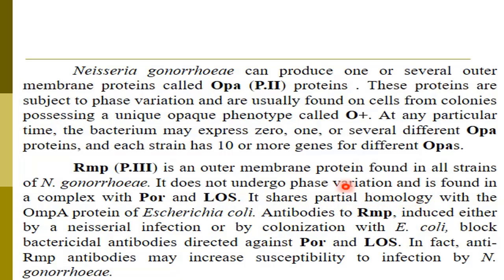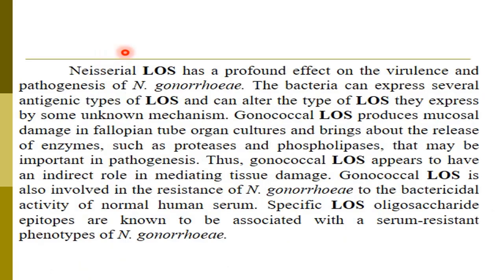RIMP shares partial homology with the OmpA protein of E. coli. Antibodies to RIMP — induced by Neisserial infection or by colonization with E. coli — block bactericidal antibodies directed against pore and lipooligosaccharide. Anti-RIMP antibodies may increase susceptibility to infection. We will see in the following figure how the lipooligosaccharide of Neisseria gonorrhoeae mediates production of two mucosal damage factors.